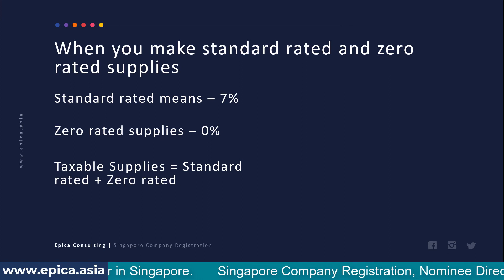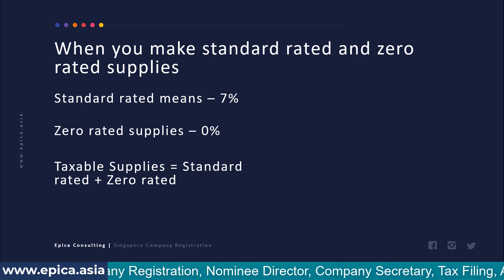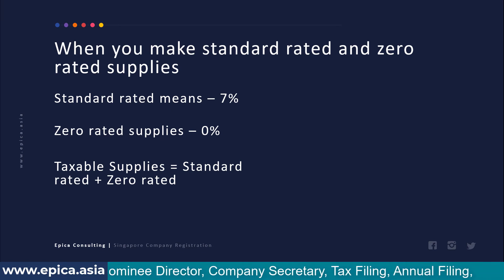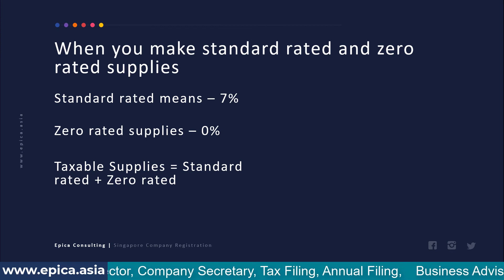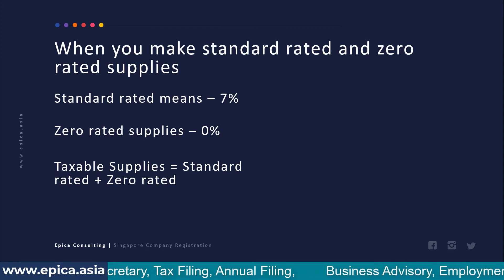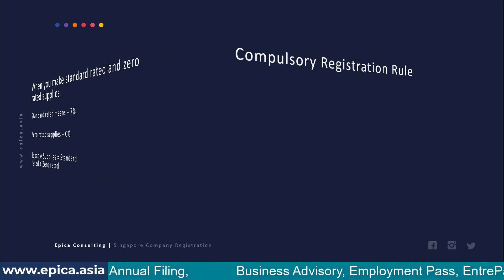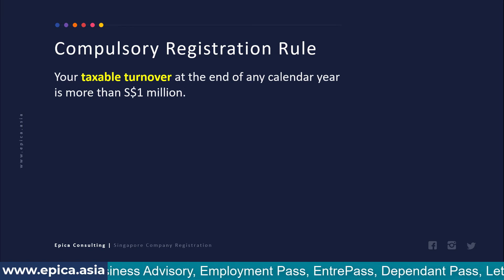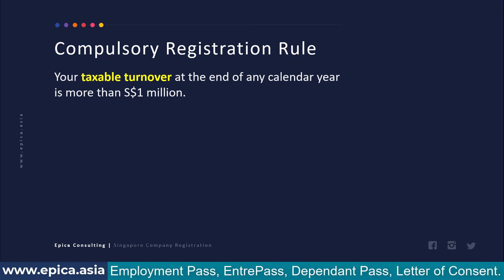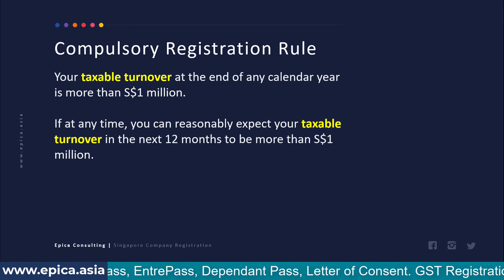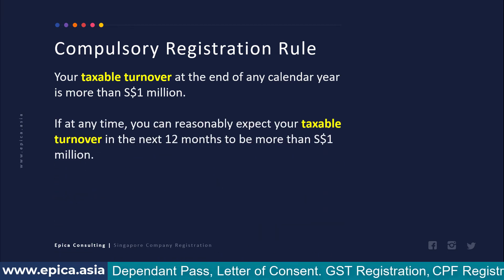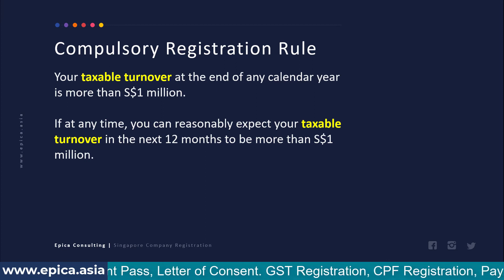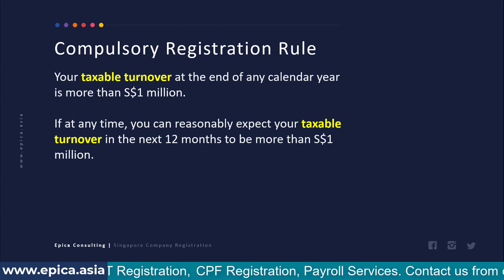Consider a company that is both exporting goods and selling locally. The local sale is made at seven percent GST, and the export attracts no GST as a zero rated supply. Looking at the compulsory registration rule: if your taxable turnover at the end of any calendar year exceeds one million dollars, or if during the coming 12 months you are expected to cross one million dollars of taxable turnover, you are liable to register for GST.